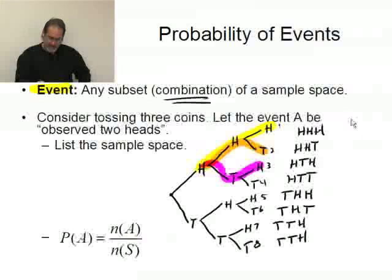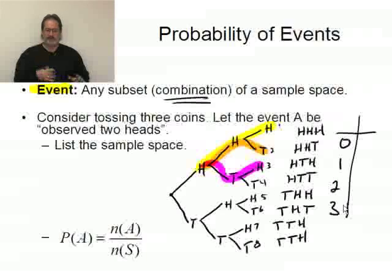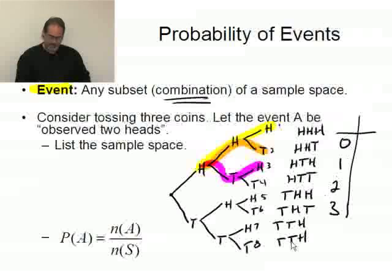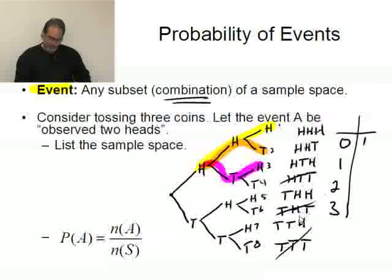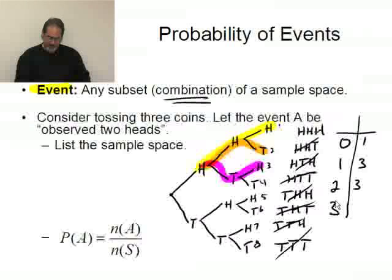Good — I got them all: eight outcomes total. Now thinking in terms of number of heads, I could get zero heads, one head, two heads, or three heads, because the question was: what's the probability of getting two heads? Zero heads is the same as all tails — there's only one way that can happen. One head — there are three different ways. Two heads — there are three ways. All three heads — there's only one. Adding those up: one plus three plus three plus one equals eight. Good, it adds up to eight.